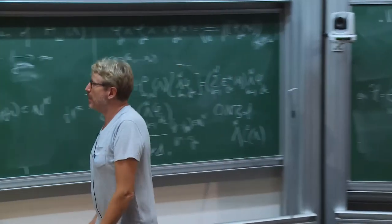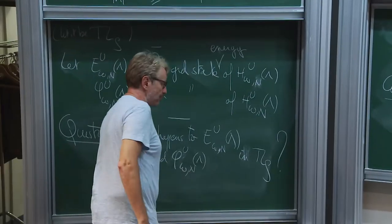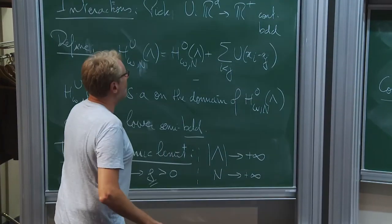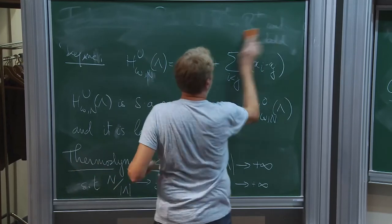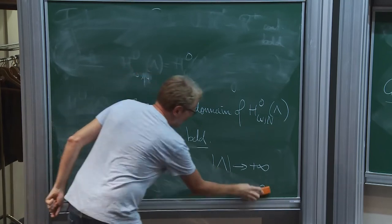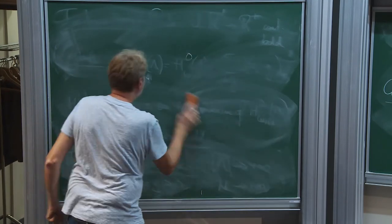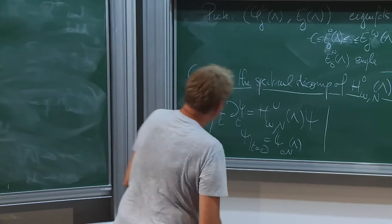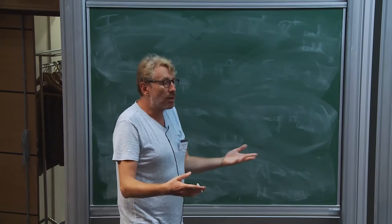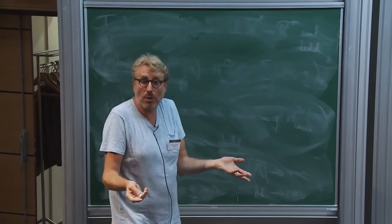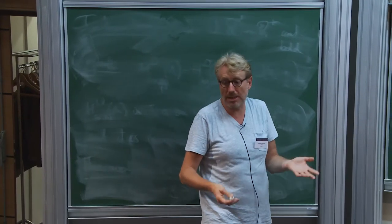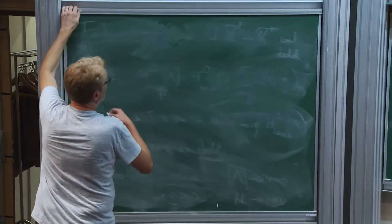One of the problems that you have here is that you let n go to infinity — the number of particles. So if your eigenfunctions depend on a growing number of variables, it's going to be, if not impossible, at least cumbersome to study the limit of such functions. The way you do it is the standard way in probability theory: as you can't study the global function, what you're going to study is its marginals.